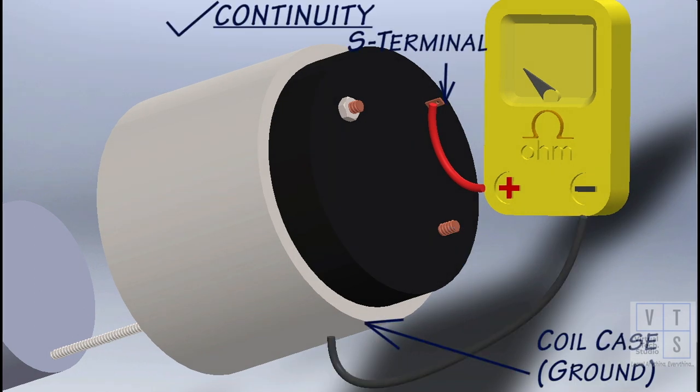Check for continuity across magnetic switch S terminal and coil case. If no continuity exists, hold-in coil is open and should be replaced.